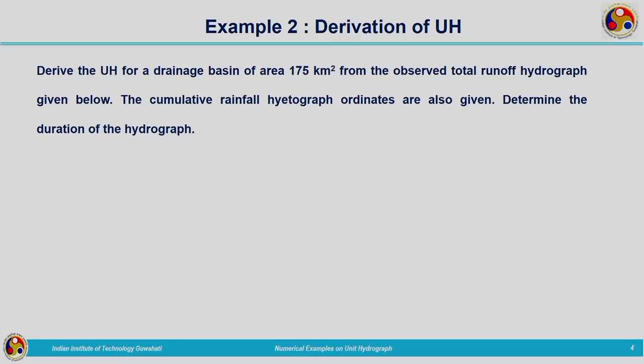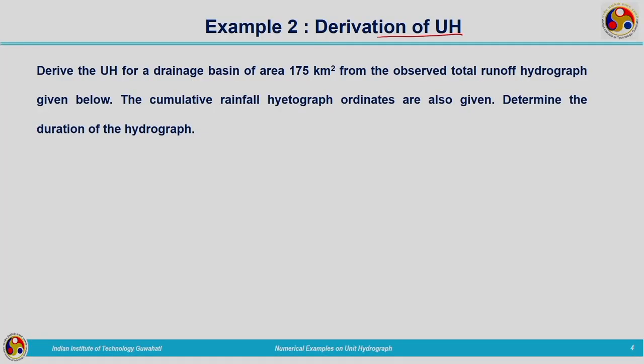The same principle can be applied to the case of a direct runoff hydrograph. Moving on to the second example — derivation of a unit hydrograph — we will see how to derive a unit hydrograph if we are given stream flow data. We need the details related to stream flow and also the corresponding effective rainfall, which should be uniformly distributed for a particular duration over the entire catchment.